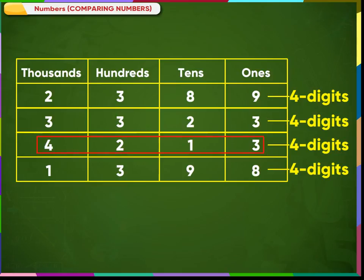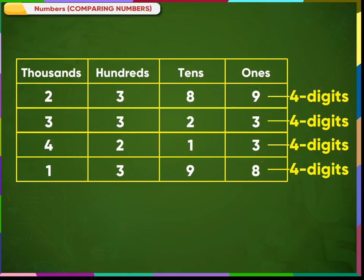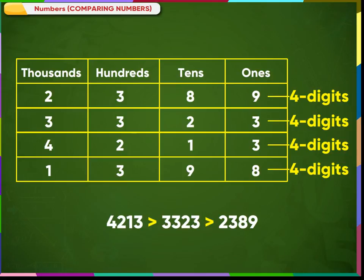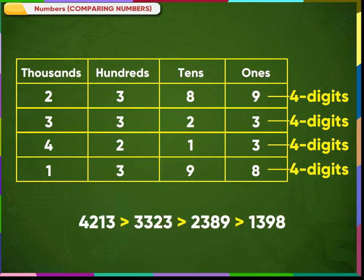Then the next biggest number is 3323, followed by 2389, and the smallest number is 1398. So, 4213 is greater than 3323, which is greater than 2389, which is greater than 1398.